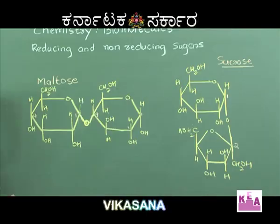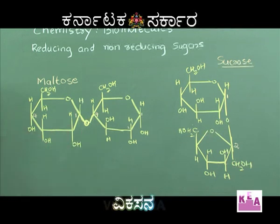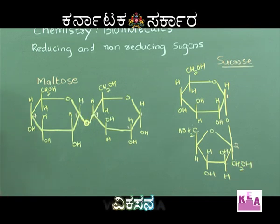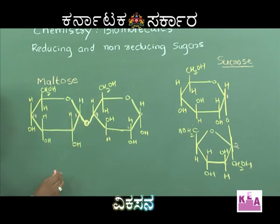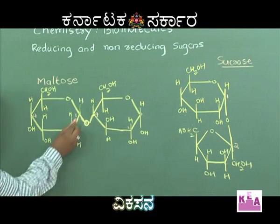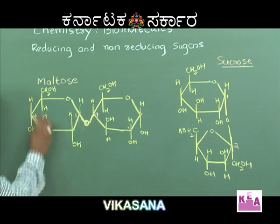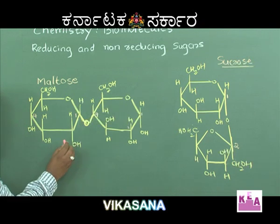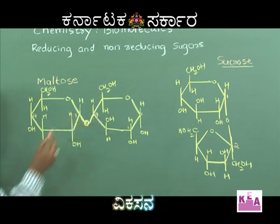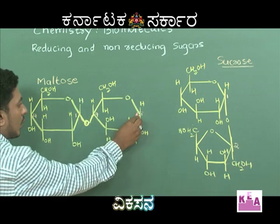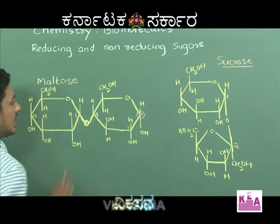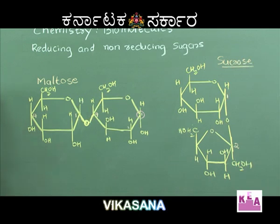Let's take an example. This is the structure of maltose. Maltose is made up of two alpha-D-glucose units. In alpha-D-glucose, the aldehyde functional group is on the C1 carbon atom. The linkage between one glucose and another is a 1,4 linkage — the first carbon of one glucose is involved in glycosidic linkage, whereas the fourth carbon of the other glucose is involved. Hence, the first carbon of the other glucose is free, meaning the aldehyde is free to react. Hence, maltose is a reducing sugar.